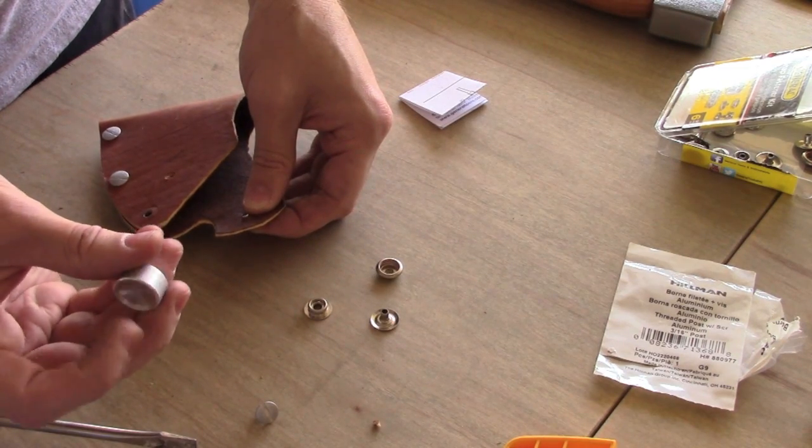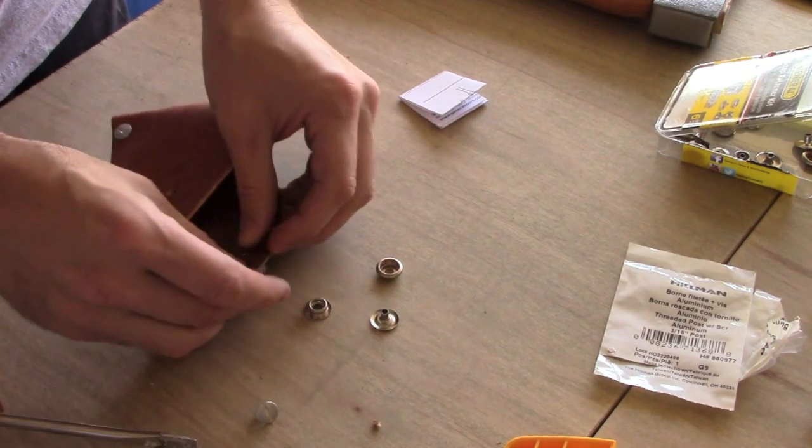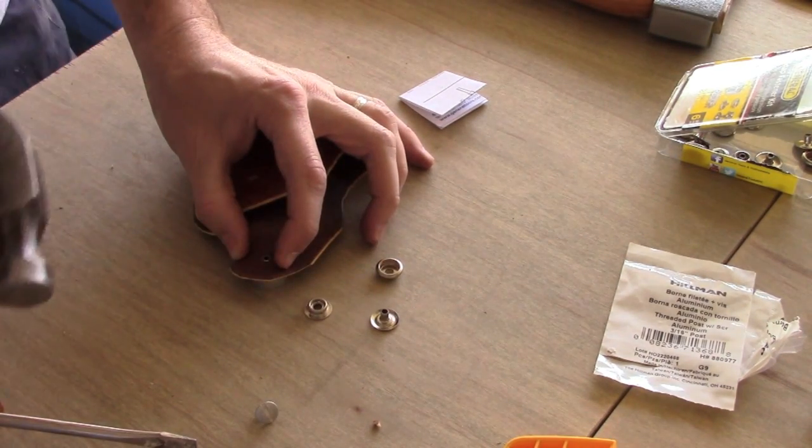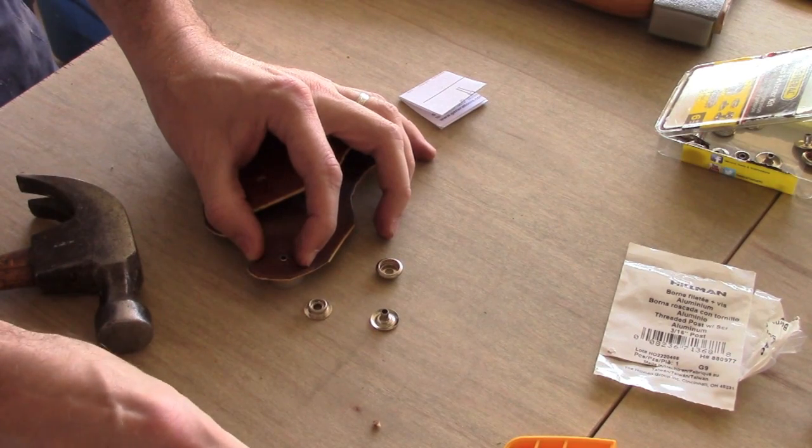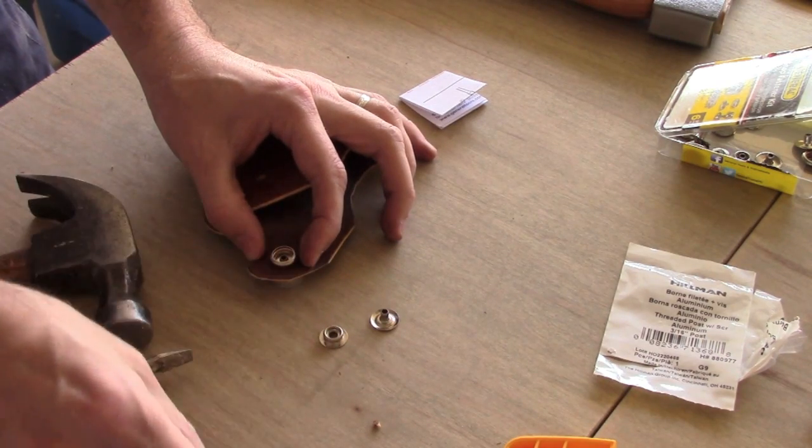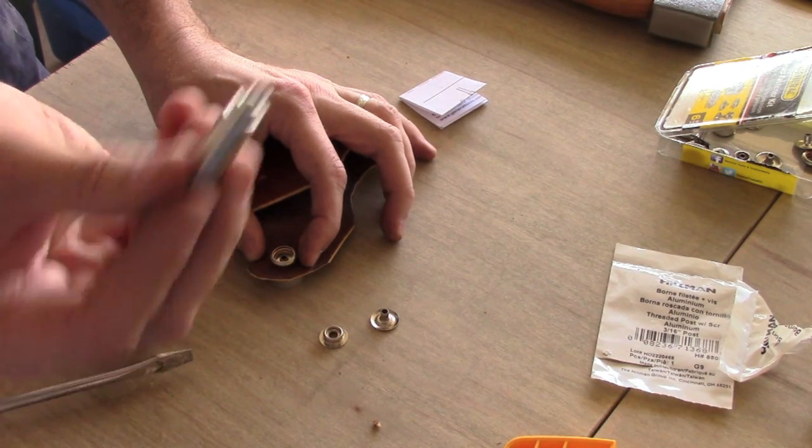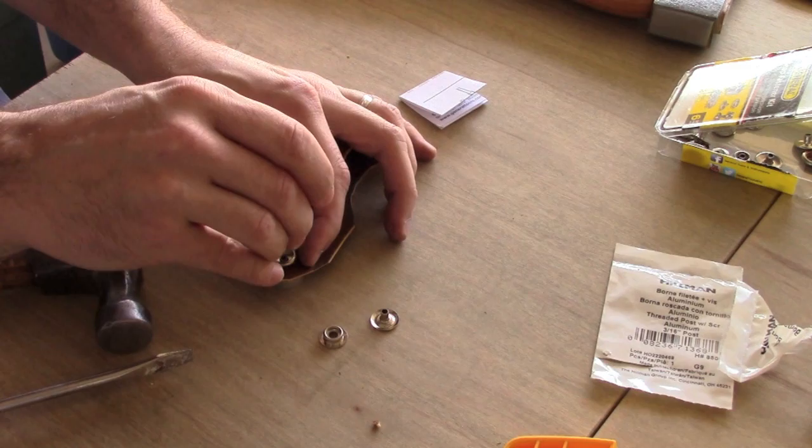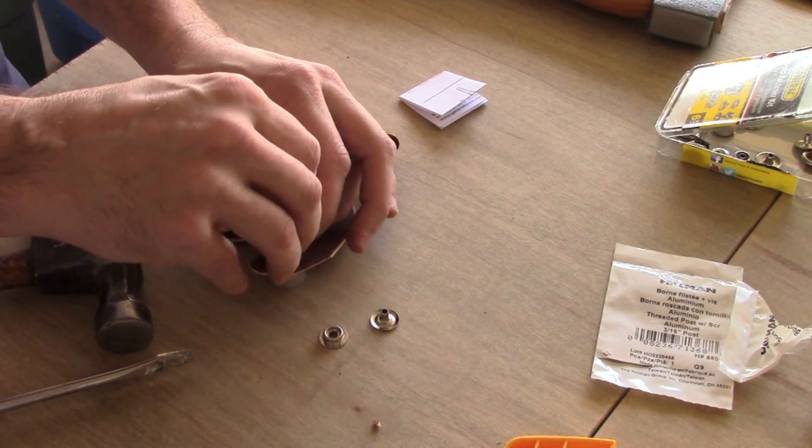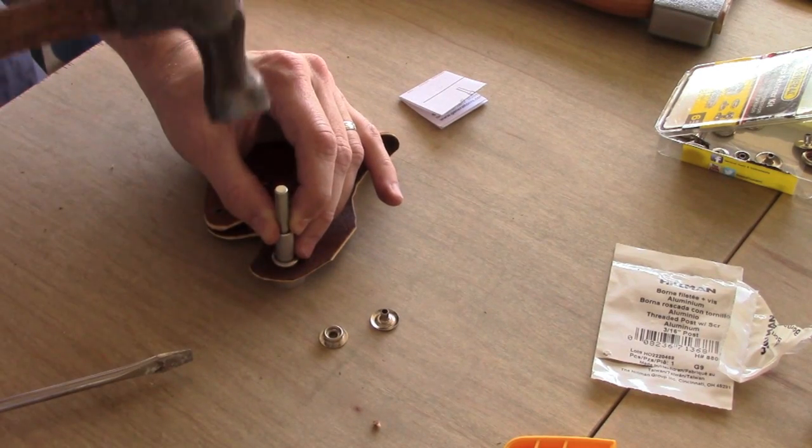This outside one is easy to set. There's a cup here so it doesn't mar the button portion of the snap. Just set it in to punch it down. You're going to need a hammer and the punch itself. Set it down in the center portion of that rod. Make sure it's set properly. You have to give a good few whacks.